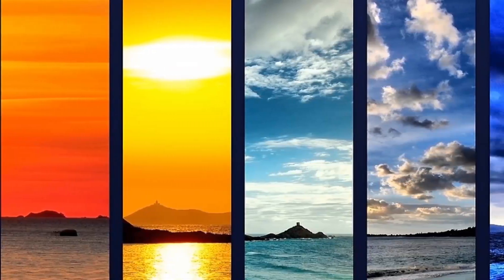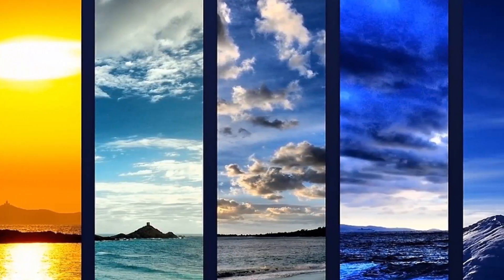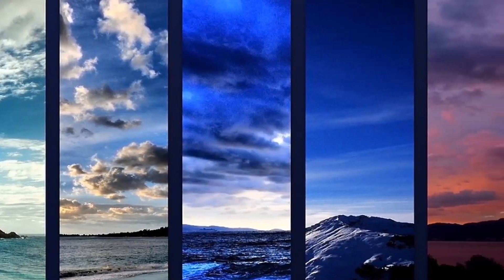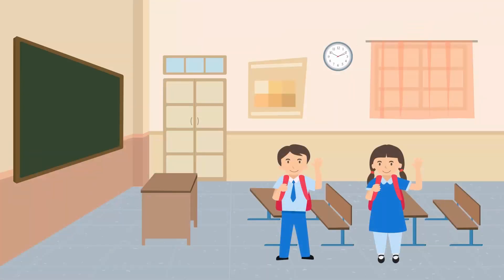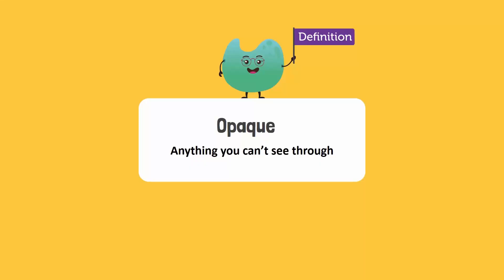Look around you. Everything you see has a color, different shades, different tones, like those of your classroom, your uniform, or your pencil. All these colors help you see opaque objects. Opaque means anything you can't see through, like your hand or the walls of your classroom.